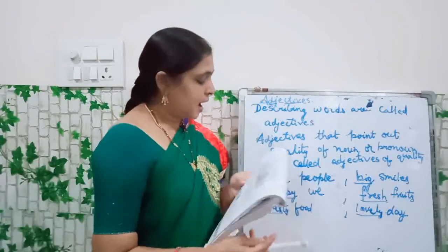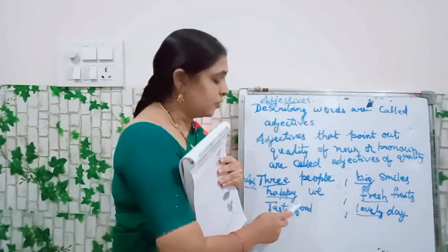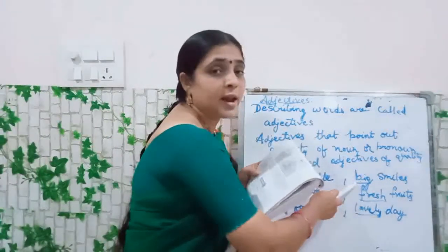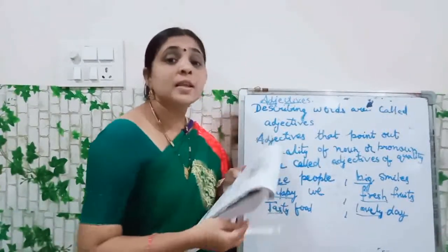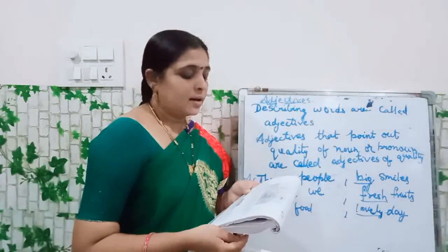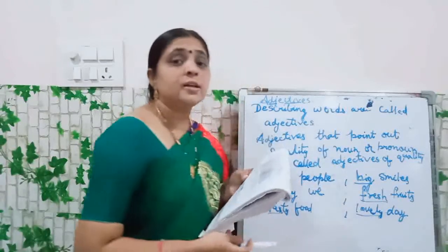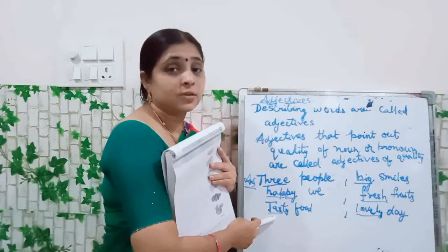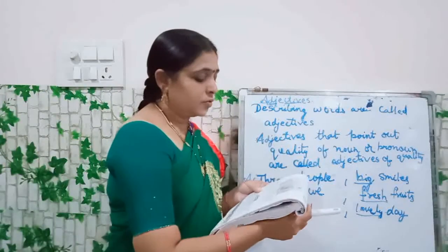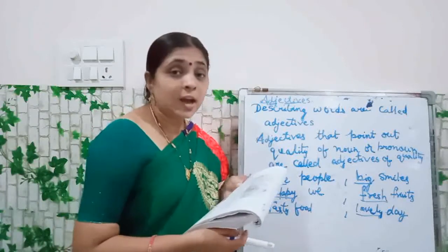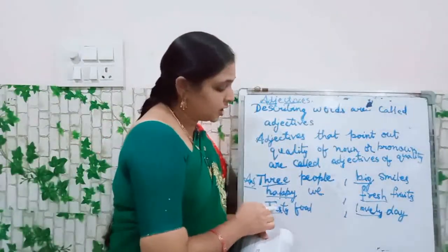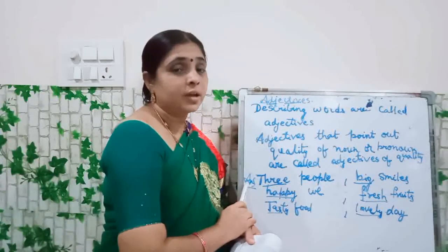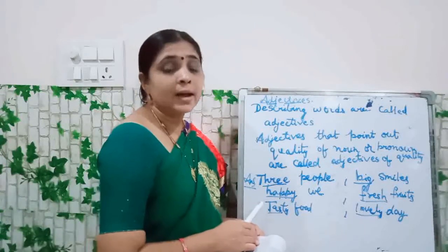Next one — underline 'happy.' How are we? Happy. So 'we' is pronoun and 'happy' you have to underline. Next one is 'big smiles' — underline 'big.' How are the smiles? Big smiles. And then underline 'fresh' — how are the fruits, children? Fresh. Then underline 'tasty food' — tasty food, underline 'tasty.' Next one — underline 'lovely day.' How is the day? Lovely day. Then these are the adjectives — whatever you have underlined. Now keep the answer and then you have to write these words which you have underlined.